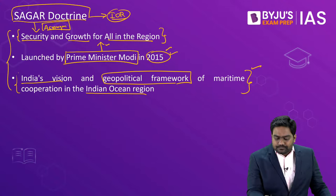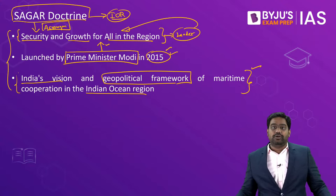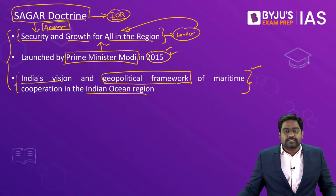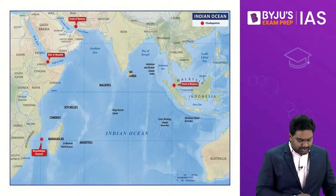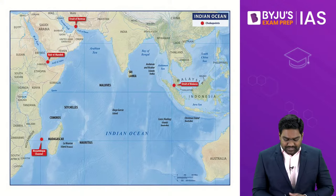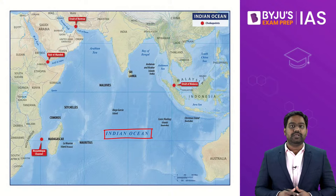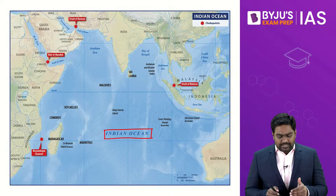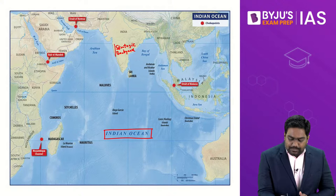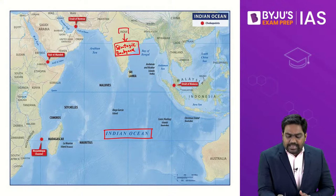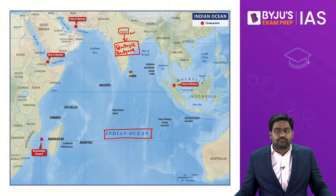Through this doctrine, India envisions itself as the primary leader of the Indian Ocean and guarantees security and growth for all the countries spread across the Indian Ocean. To understand this, we need to appreciate the strategic and economic significance of the Indian Ocean from India's point of view. Traditionally, the Indian Ocean has been the strategic backyard of India — India has been the predominant power and influence in the Indian Ocean.